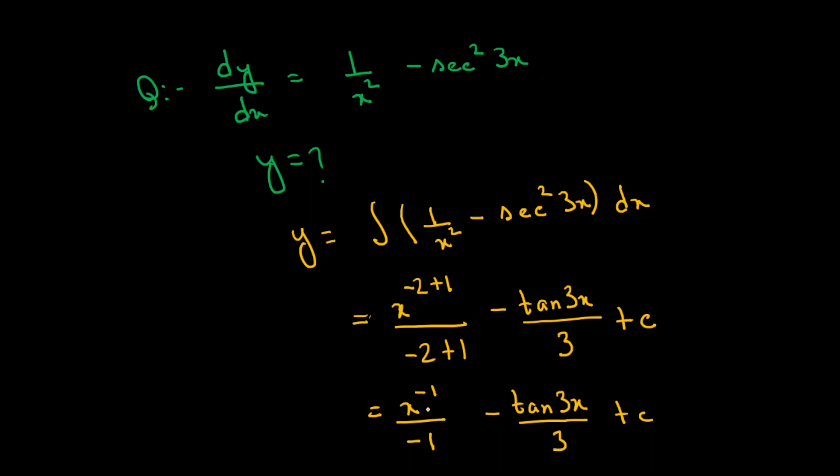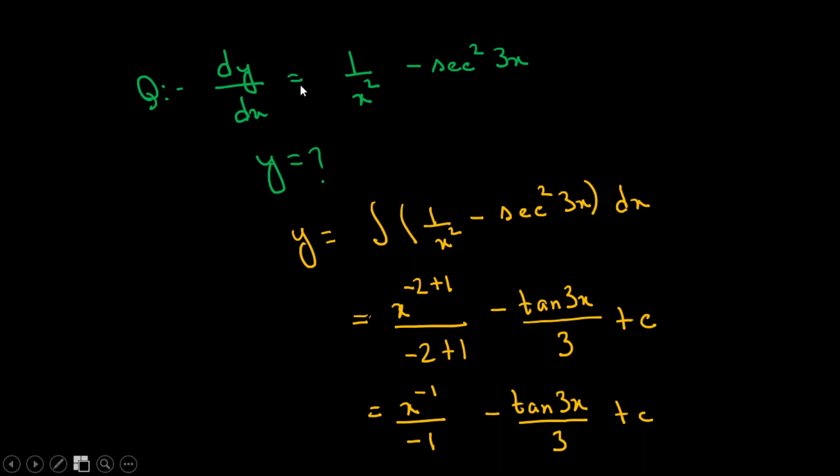x to the power minus 1 by minus 1 gives minus 1 by x minus 1 third of tan 3x plus c.